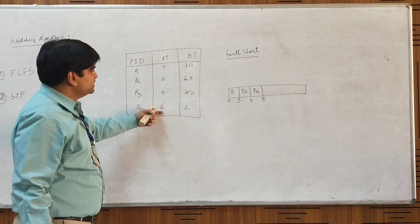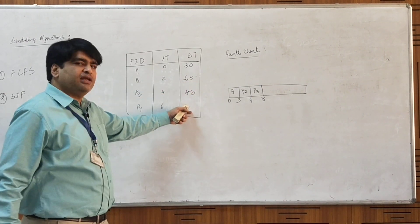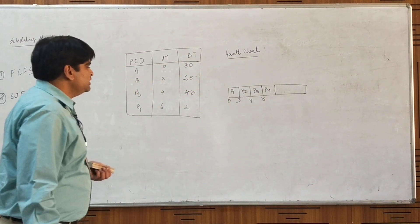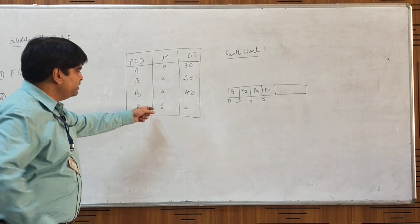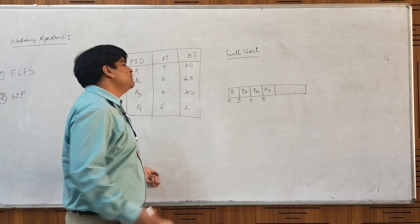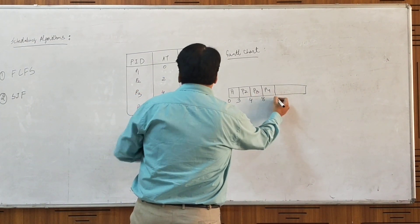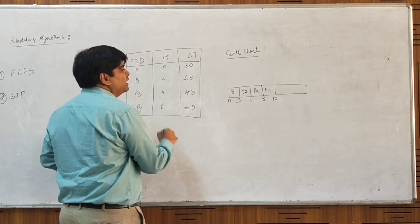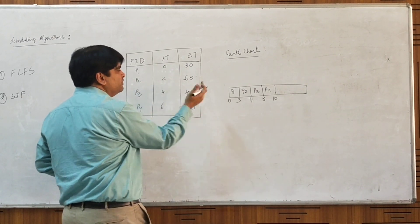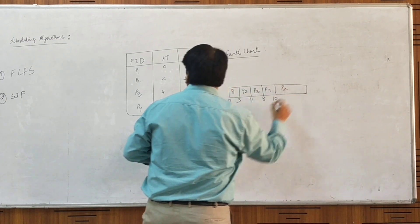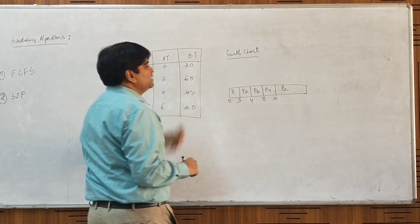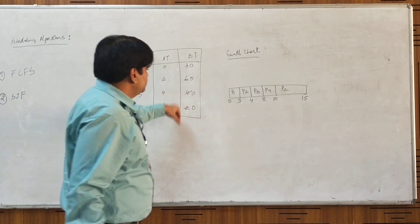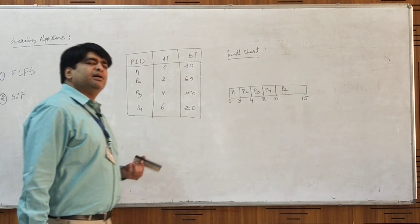At t=8, we again have 2 processes: P2 with remaining burst time of 5, and P4 with burst time of 2. So we continue with P4. No other process can interrupt because after t=6, no new processes arrive. We execute P4 completely from 8 to 10 seconds. After P4 completes, only P2 remains with a remaining burst time of 5 (originally 6, now 5). So from 10 to 15 we schedule process P2. In this way we complete all executions using the preemptive SJF approach.